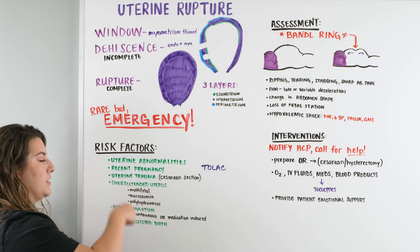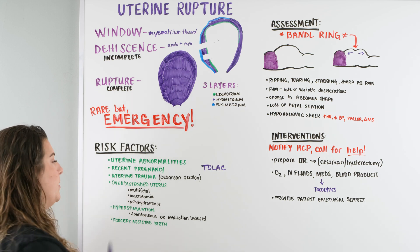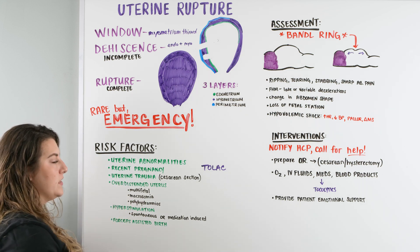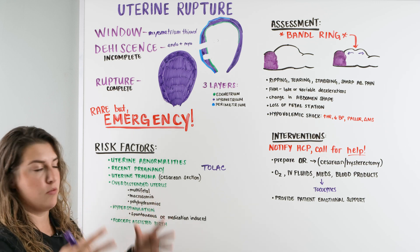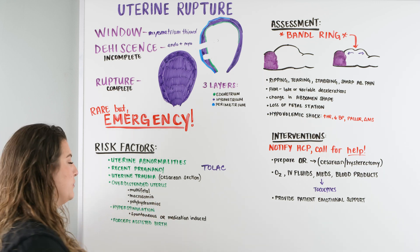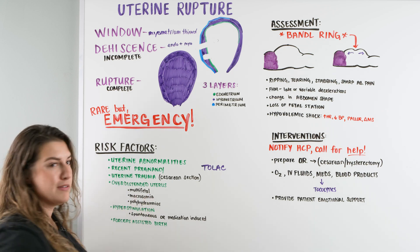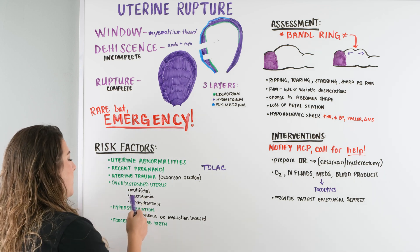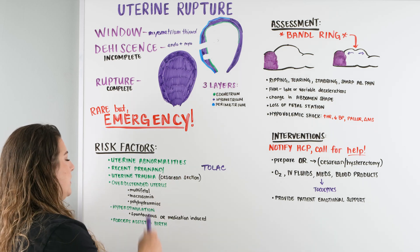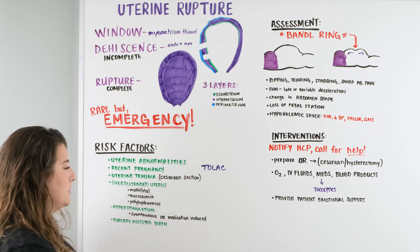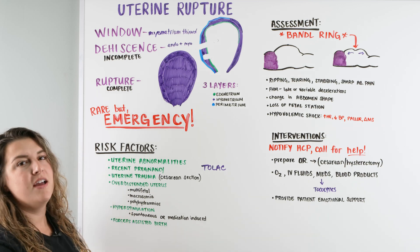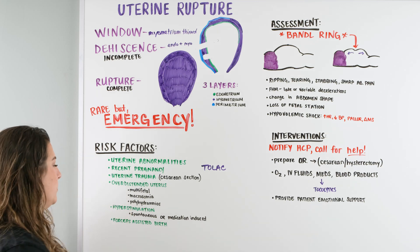Then there are issues that are current with this pregnancy. There's over-distension of the uterus, where the uterus gets really big. This can happen with multifetal pregnancy — lots of babies inside — macrosomia, meaning a big baby inside, or polyhydramnios, which is a lot of fluid inside. All of these can cause over-distension, or over-pushing on the uterus from the inside, creating a potential for rupture.